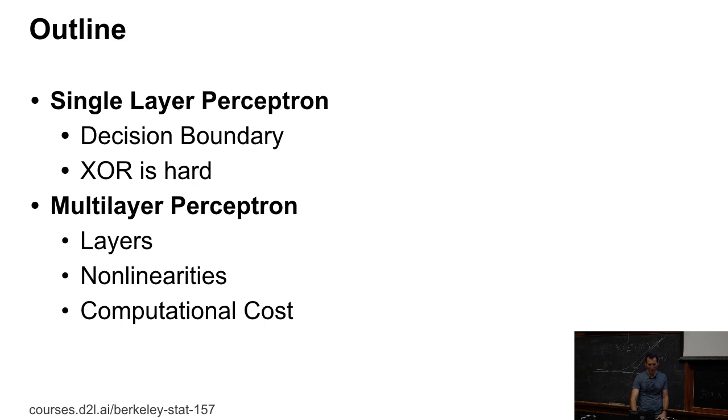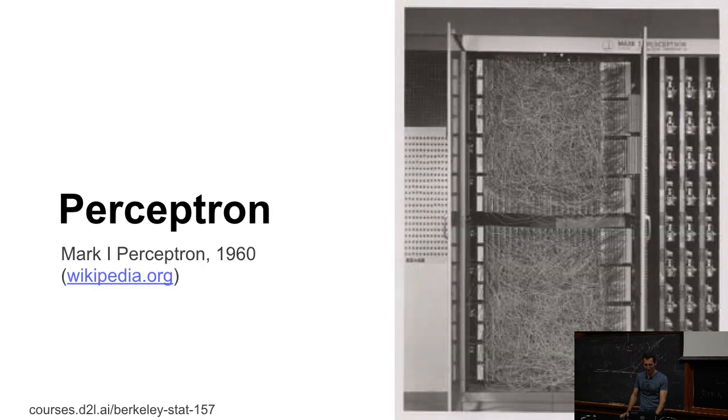In order to do so, let's first actually look at a little bit what people in the 50s did with neural networks. And so, for that, we need to look at the perceptron and what Mr. Rosenblatt did and all of that. And then we'll take care of the multi-layer perceptron. So, this is the Mark I perceptron, 1960.